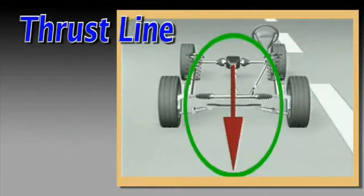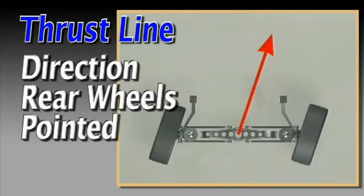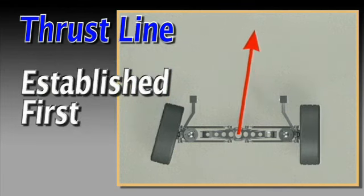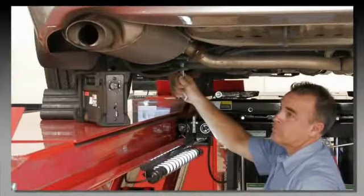The straight ahead reference used for front measurements is thrust line. Thrust line is the direction the rear wheels are pointed. Consequently, thrust line must be established first for accurate measurement and final adjustment of front wheel geometry.